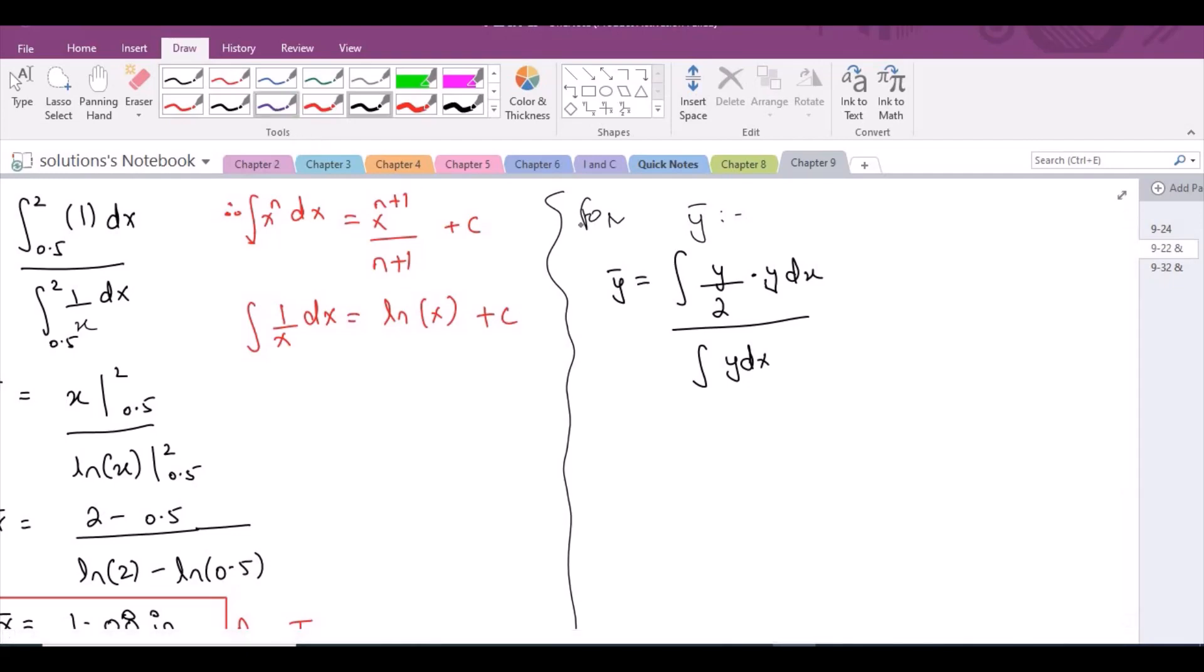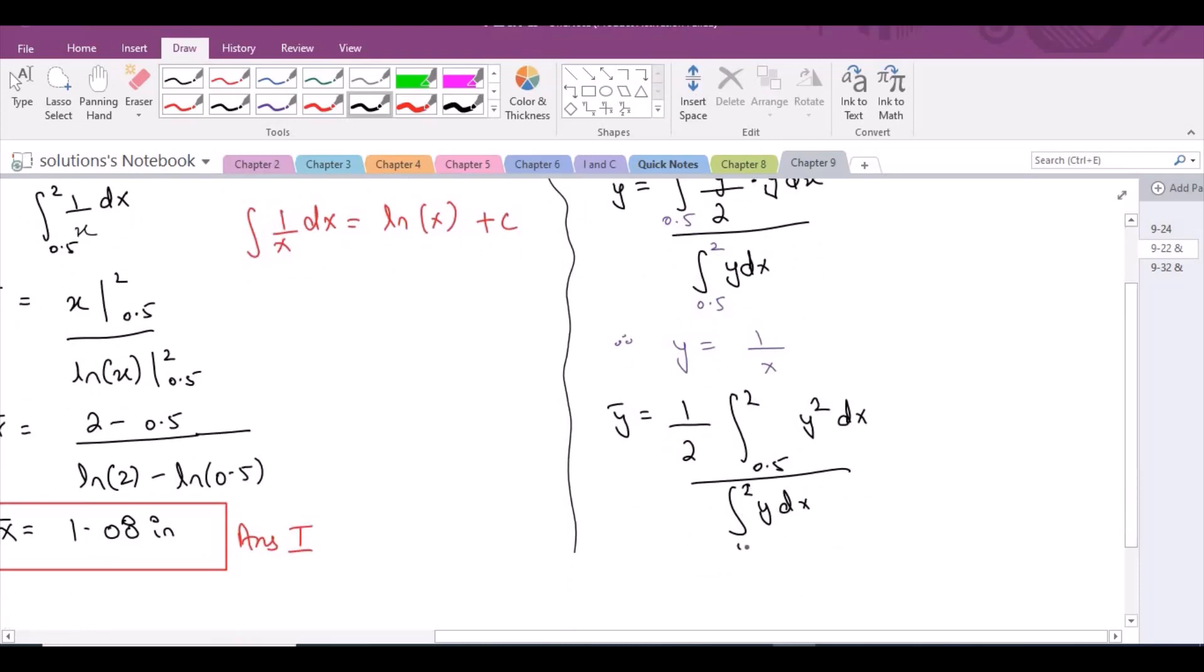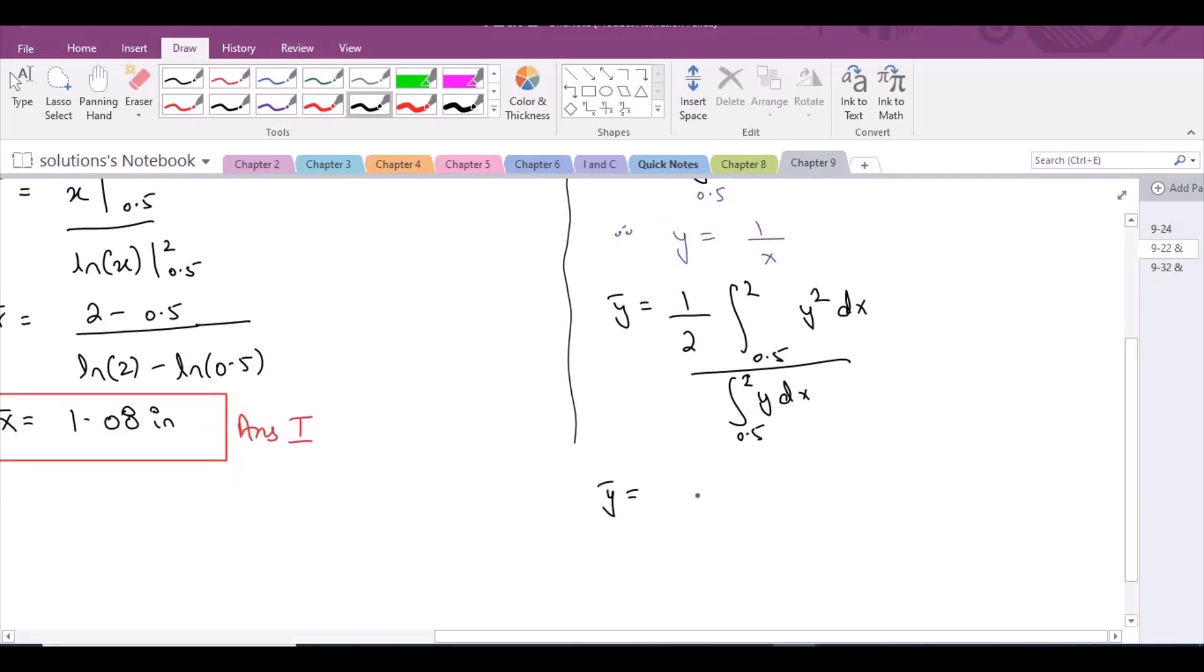The x varies from 2 to 0.5 and we know that y equals 1 upon x. So y bar equals, I can take out the half outside of the integral sign because it's a constant. When you substitute the value of y, y bar becomes 1 upon 2 integral from 2 to 0.5, 1 upon x squared dx divided by integral from 2 to 0.5, 1 upon x dx.